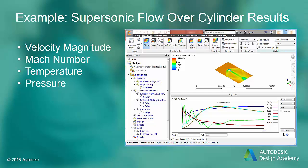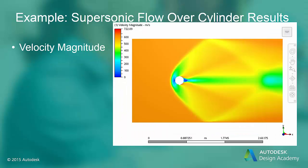The results that show the nature of this flow are the velocity magnitude, Mach number, temperature, and pressure. The velocity magnitude shows the bow shock that forms in front of the cylinder. This bow shock is a normal shock at the leading edge of the cylinder and curves into an oblique shock away from the leading edge. The velocity plot also shows the separation region in the adverse pressure gradient area of the cylinder.